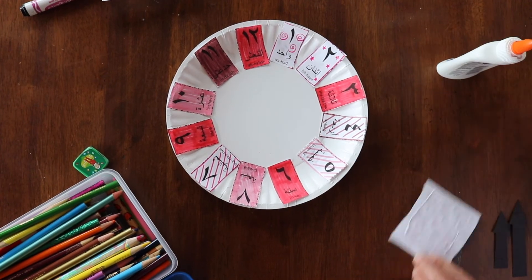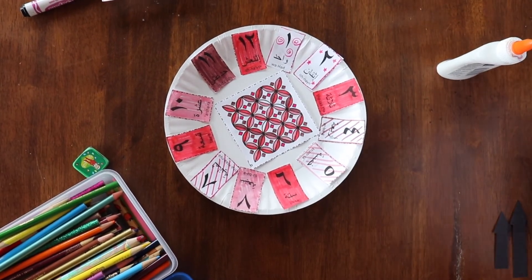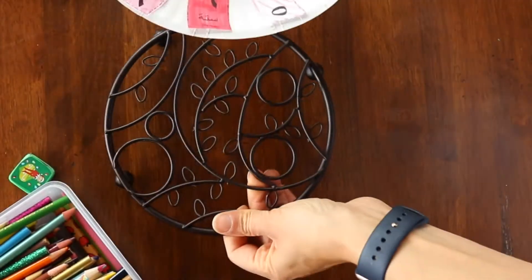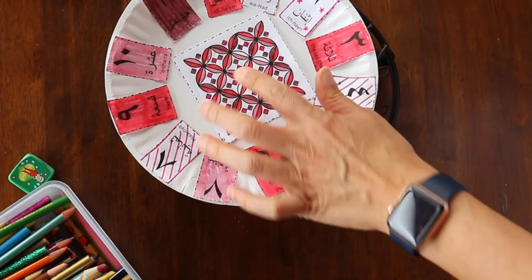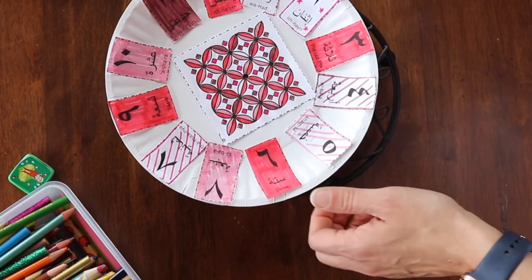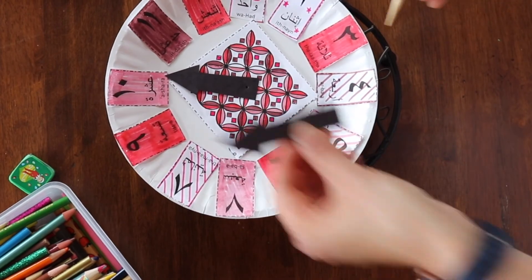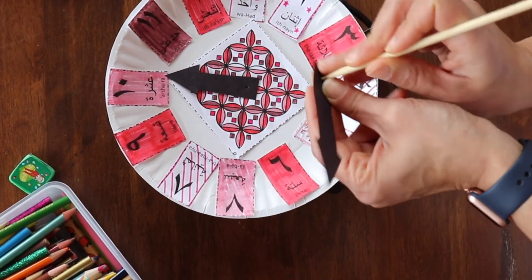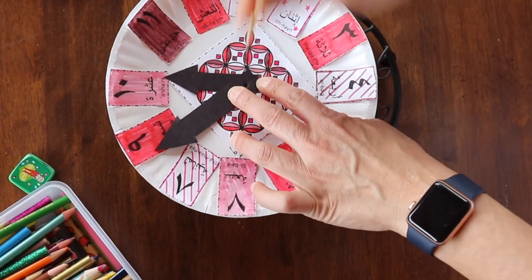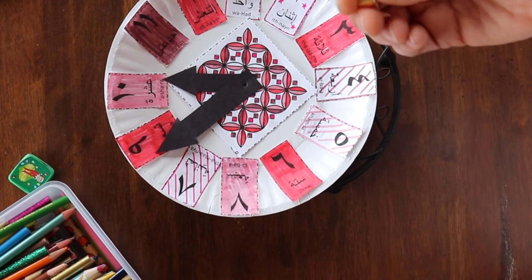And then you can glue on your centerpiece right there in the middle. And you want to grab something sharp. I like to get something that's sort of stable as the paper. And you just poke a hole right in the middle. And then grab your arrows and make a hole through those right in the center. And after that, you'll grab your fastener, stick it in the middle. And voila! You have your clock with Arabic numbers.